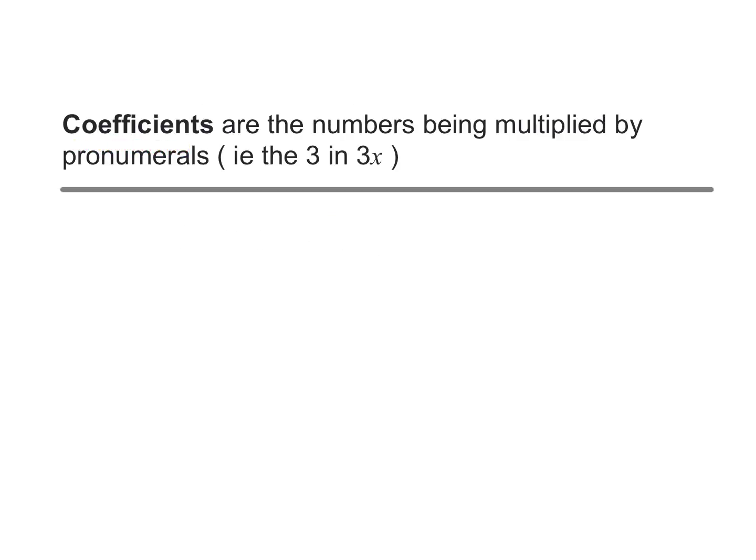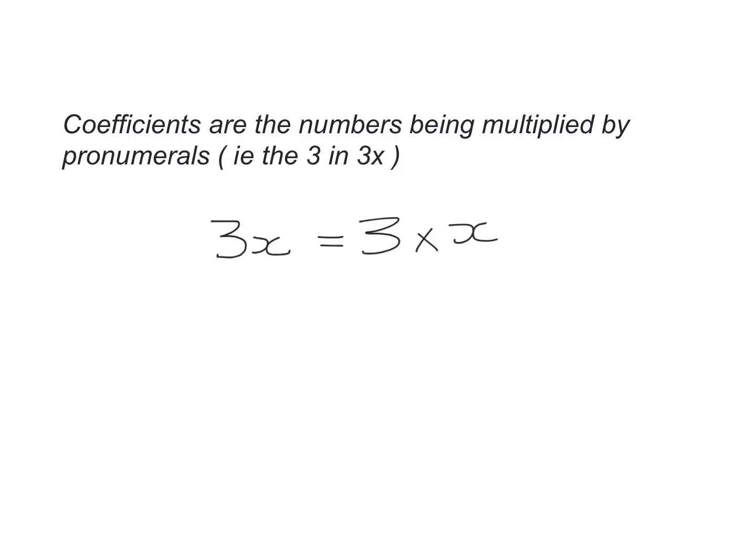Coefficients are the numbers being multiplied by a pronumeral, for example the 3 in 3x. So 3x can be written as 3 times x, with 3 being the coefficient because it's the number, and x is the pronumeral because it is a letter.